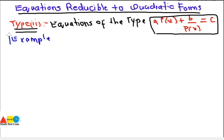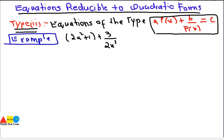We have an example: 2x² + 1 + 3/(2x² + 1) = 4. This is the example and you have to solve this equation by reducing it to the quadratic equation, as otherwise it will be a complex method to solve it.